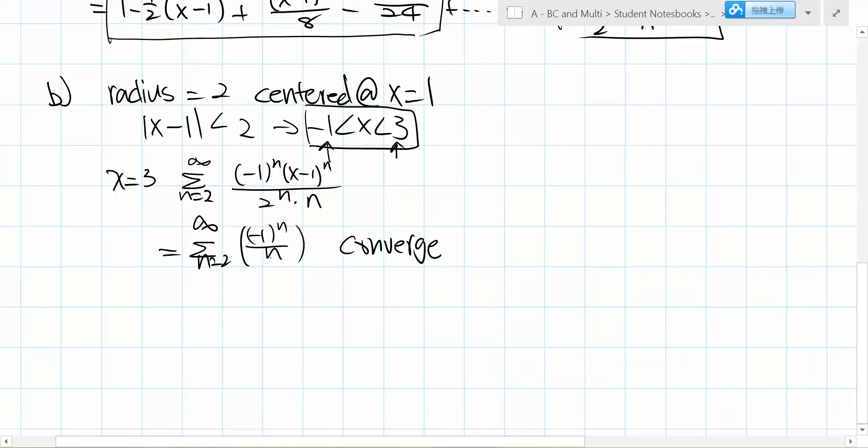We know this converges because even though it oscillates due to the (-1)^n term, as n gets very large, the whole factor goes to 0, so it converges.